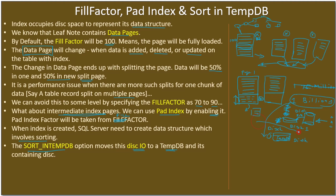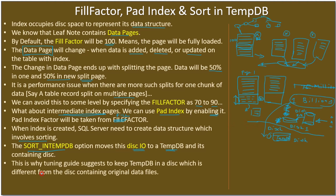Thereby the disk IO is segregated to a different disk. The database tuning guide suggests keeping tempdb on a disk different from the disk containing the original data files. If any tempdb-related operation is performed, it will be done on a separate disk with different disk IO, which belongs to a disk different from the one storing the original database files. So the index creation, which involves heavy sorting, is not affected by the original database operation or client applications.